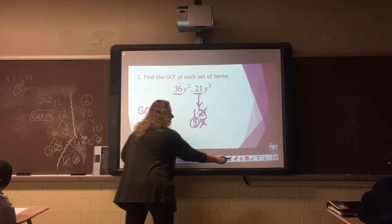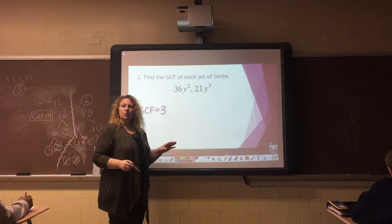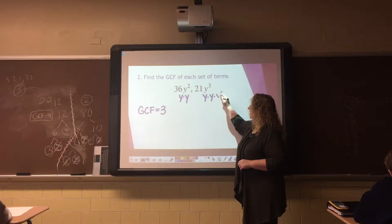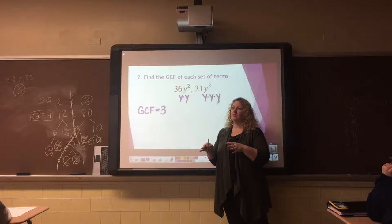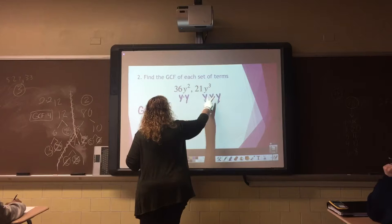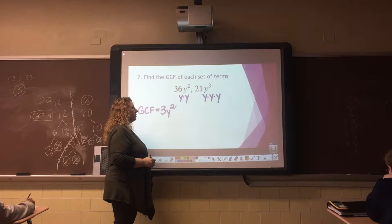Now for the letters, this is where it gets a little tricky. y to the second is simply y times y. y to the third is y times y times y. So here is the question: what is the greatest number of y's that I can take out from both terms without going into the negatives? It is 2. I can take 2 from here and 2 from here and still have enough y's. So y to the second power is then going to be the GCF, the greatest common factor.